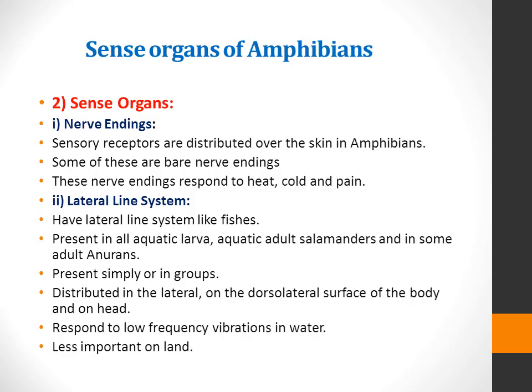Now we will talk about the sense organs of amphibians. These include nerve endings, the lateral line system, and many more. Sensory receptors are distributed over the skin in amphibians. Some of these are bare nerve endings, which respond to heat, cold, and pain.